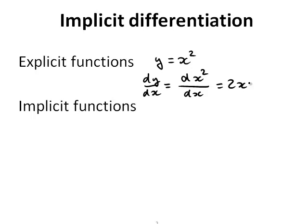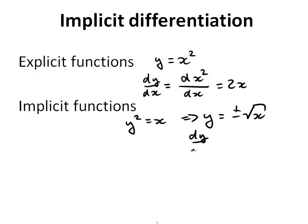But what now if we have an implicit function? For example, we could have a function of the form y squared is equal to x. What if we want to find dy by dx? Of course, we could say that's easily done — we simply rearrange this and write it as an explicit function: y is plus or minus the square root of x. And then we find the derivative, so dy by dx is going to be plus or minus 1 over 2 times the square root of x.